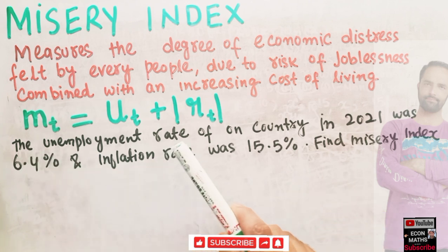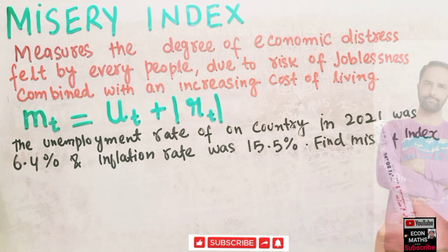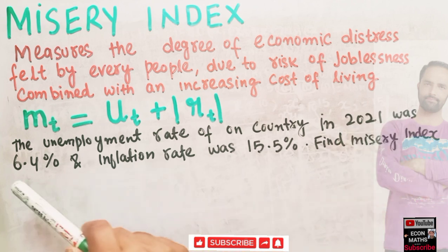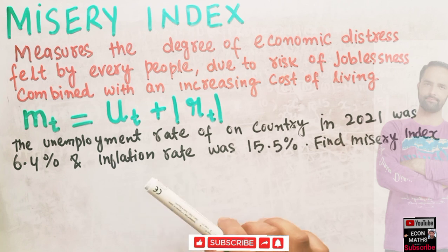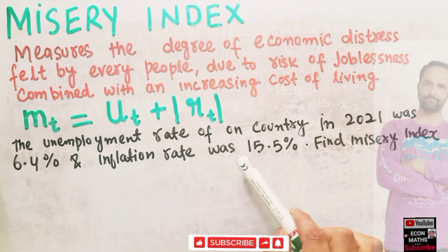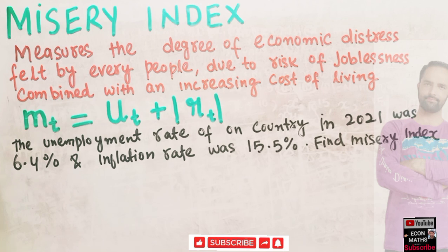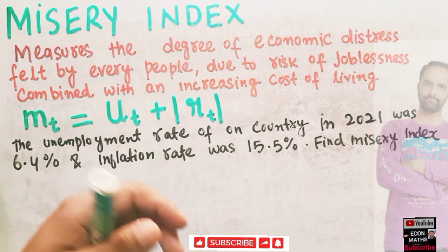A question related to this: the unemployment rate of a country in 2021 was six point four percent, and at the same time the inflation rate was fifteen point five percent. We have to find out the misery index.